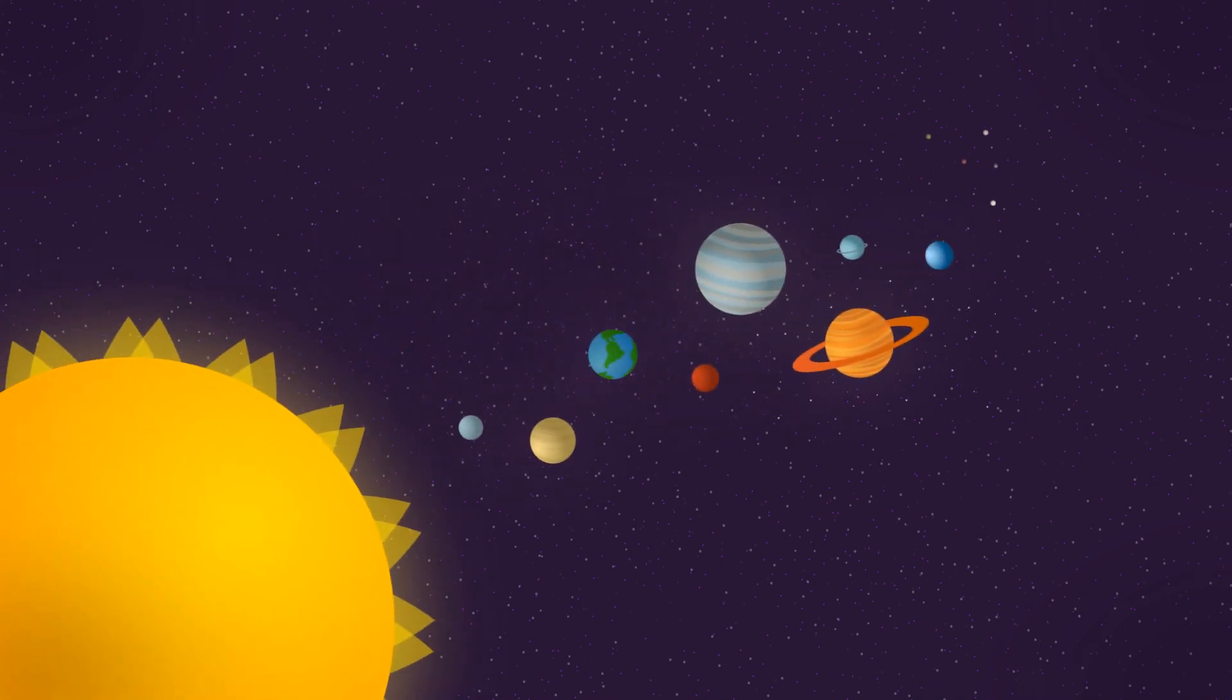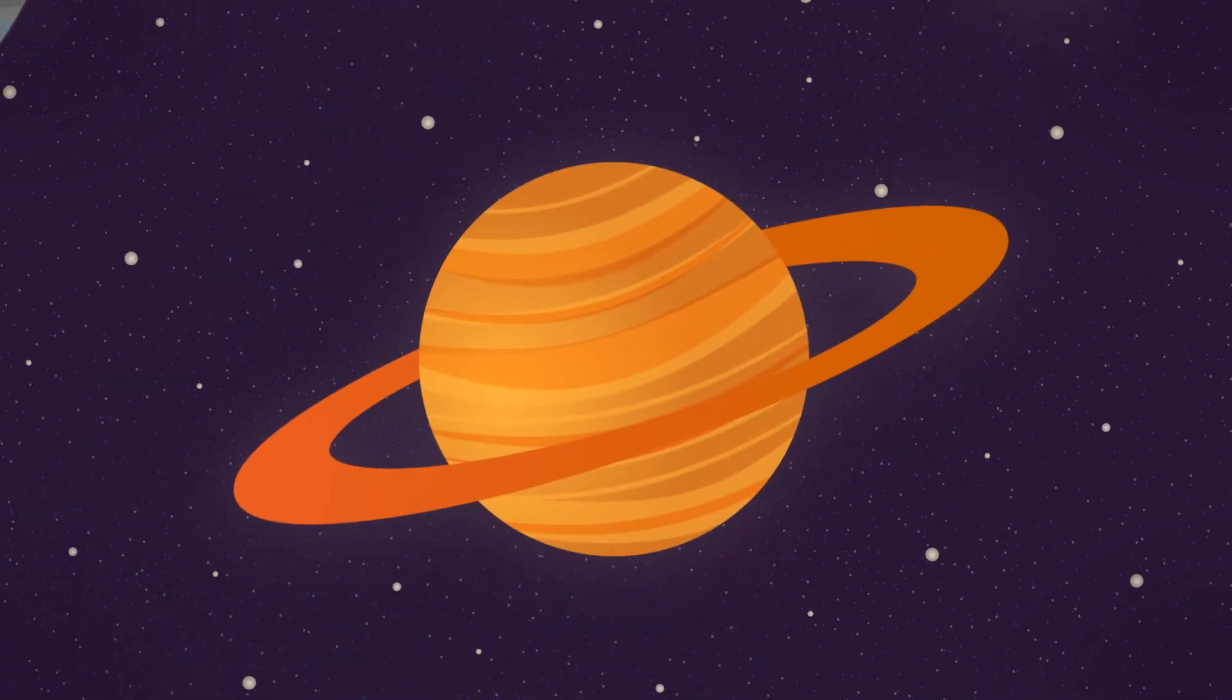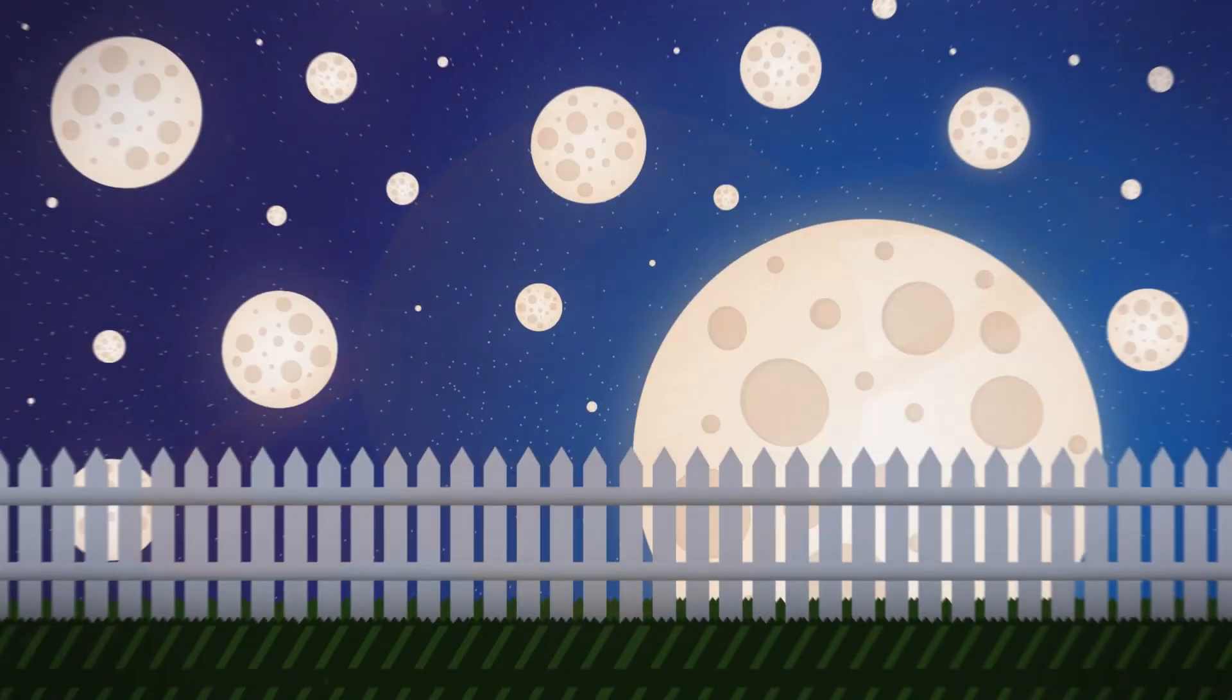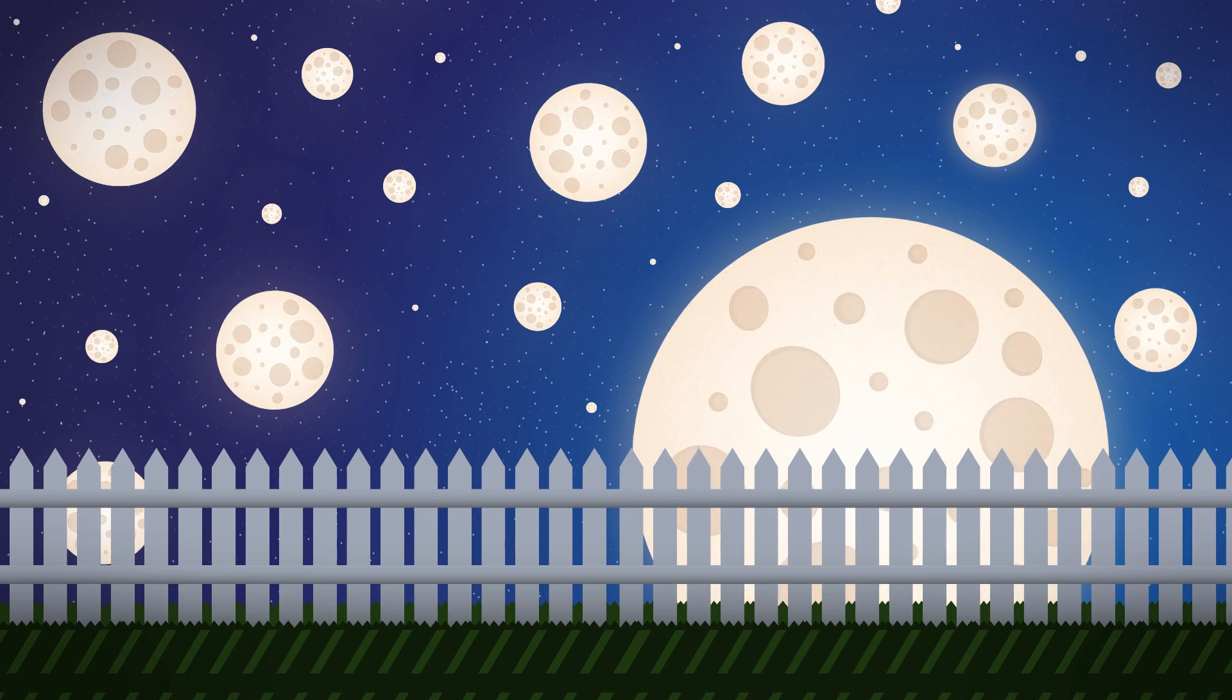Did you know that there are eight big planets in our solar system? We have five dwarf planets. Some planets have lots of moons. Saturn has over 50 moons. Could you imagine looking up from Earth to see so many moons in the sky? That would be really neat.